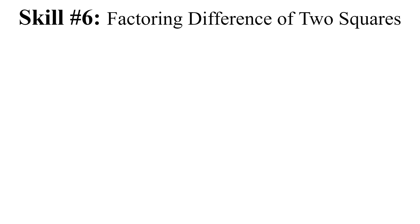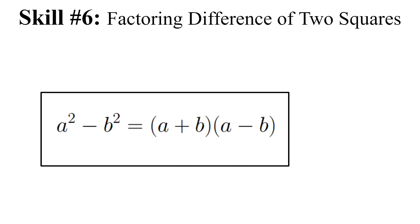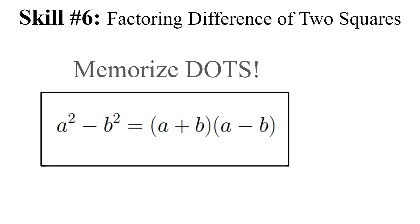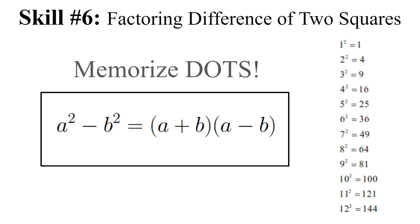Skill 6 is factoring the difference of two squares, or DOTS. The formula A² − B² = (A + B)(A − B) is not on the formula sheet, so you need to memorize it. It shows up once every test or two. To recognize it, you need your perfect squares from 1 to 144 memorized — definitely know the first 12 by heart.